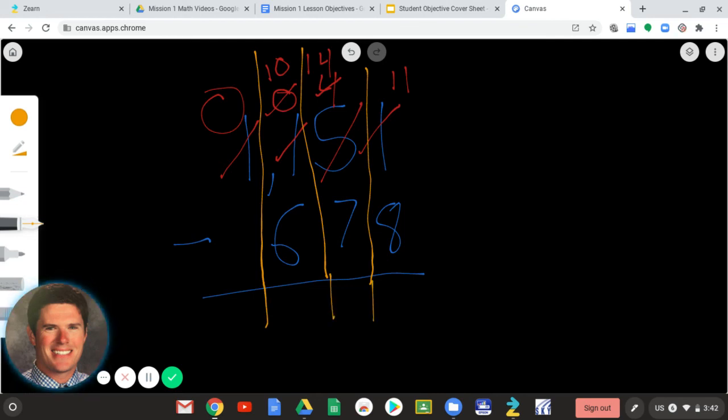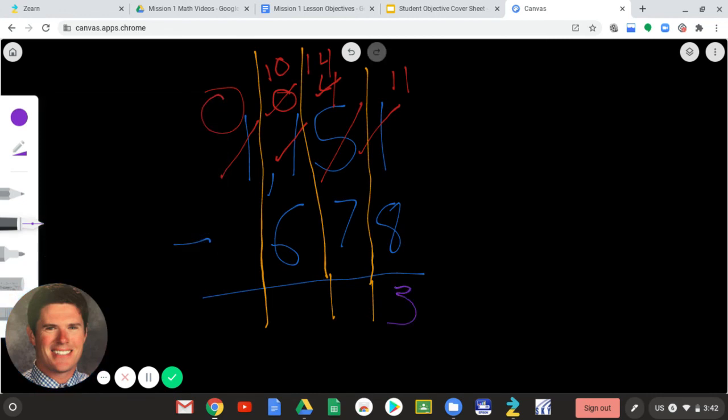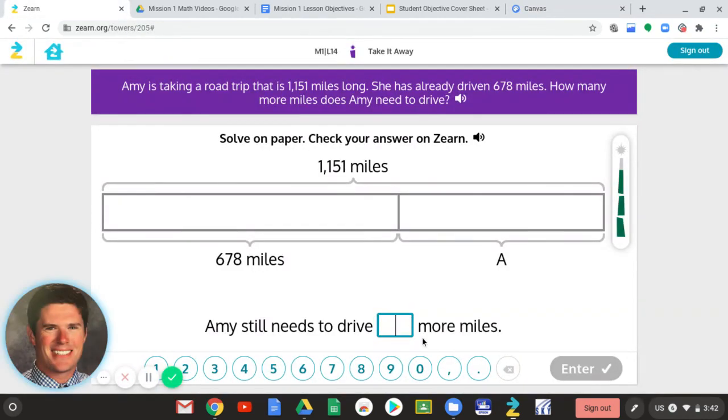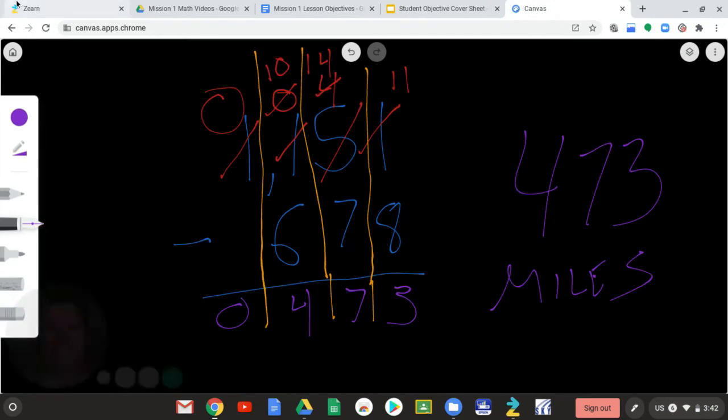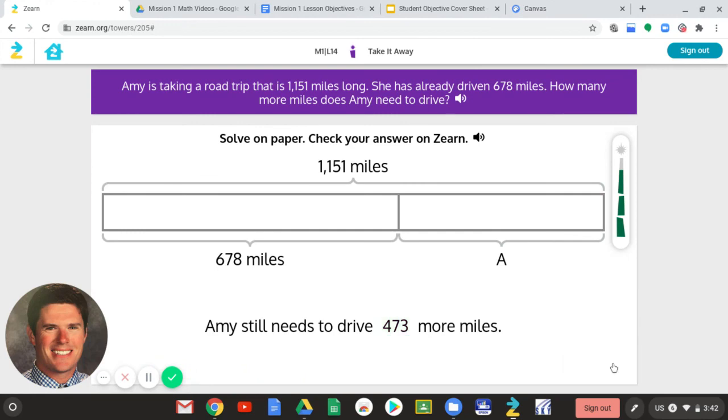Because all I'm doing here, now I can subtract. 11 minus 8 is 3. 14 minus 7 is 7. 10 minus 6 is 4. And 0 minus 0 is 0. So how much longer does she have on the trip? It should be 473 miles. Because that is our unit. We are dealing in miles. So Amy still needs to drive 473 miles.